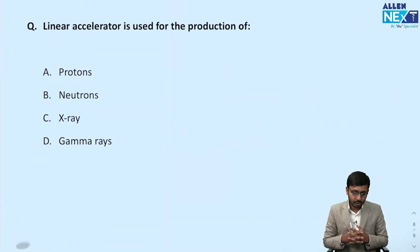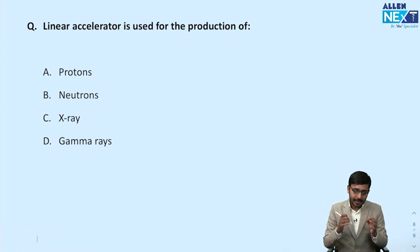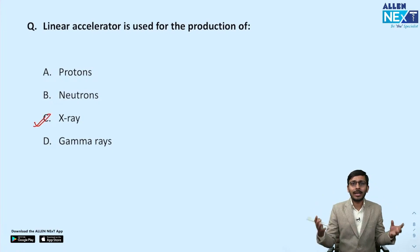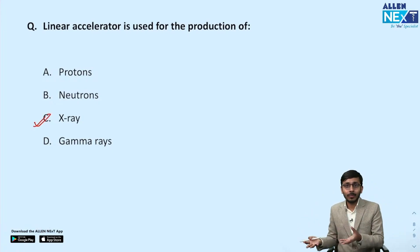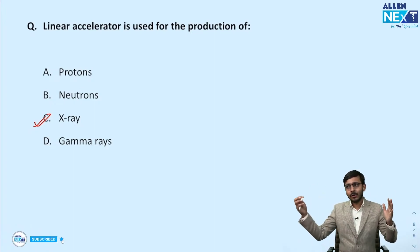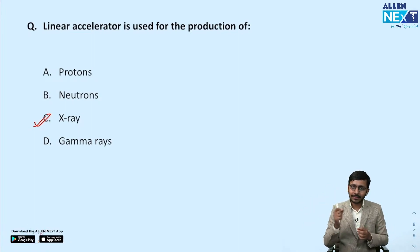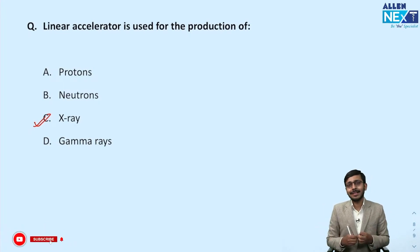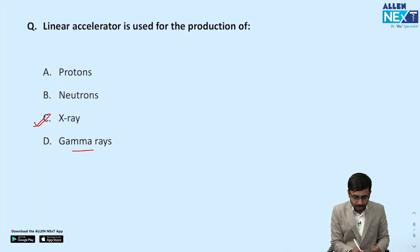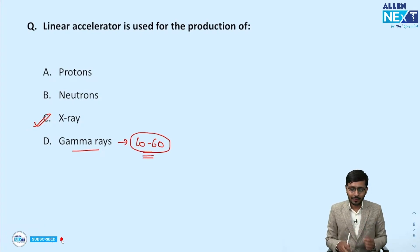A linear accelerator is used for the production of — linear accelerators produce both electrons and X-rays, so the answer is X-rays. The most common linear accelerator in day-to-day use is the cathode ray tube; electrons are rapidly accelerated between positive and negative terminals, bombard a target, and X-rays are produced. For production of gamma rays, cobalt-60 is used.